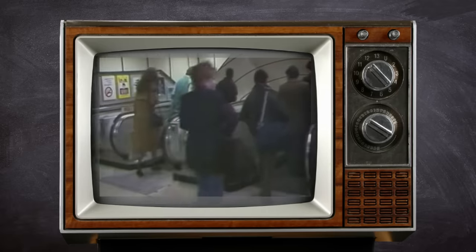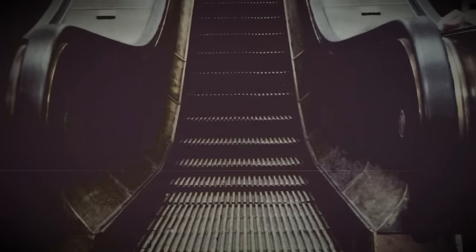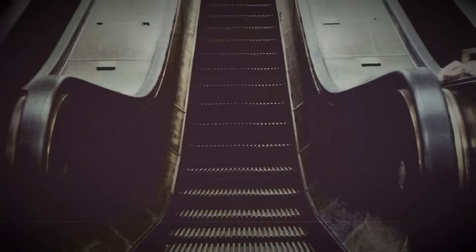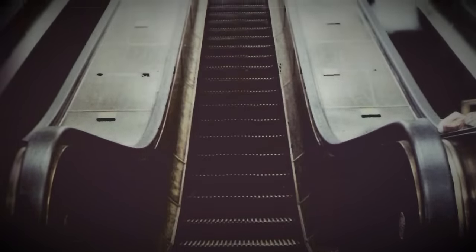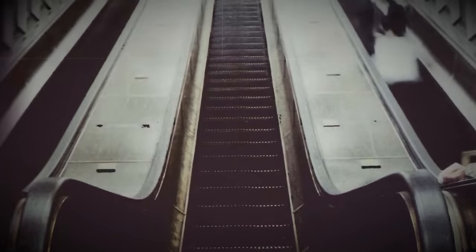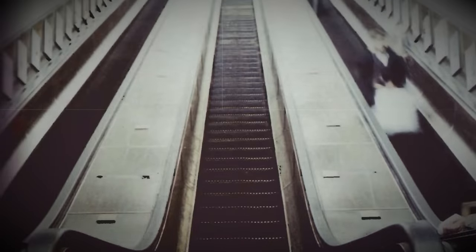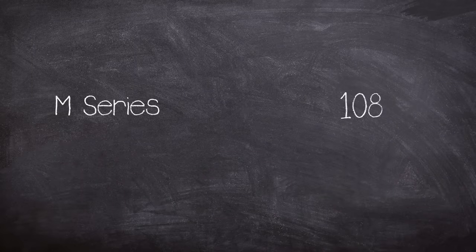To deal with the high traffic flow three M series escalators were installed to transport passengers along the 30 degree incline over a rise of 17.2 meters. The M series were a familiar sight around London underground with a total of 108 installed across the network.